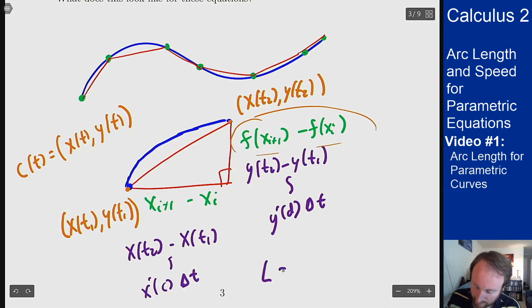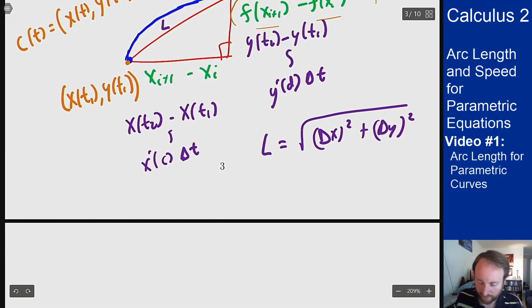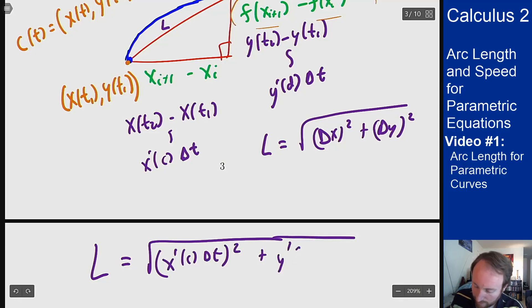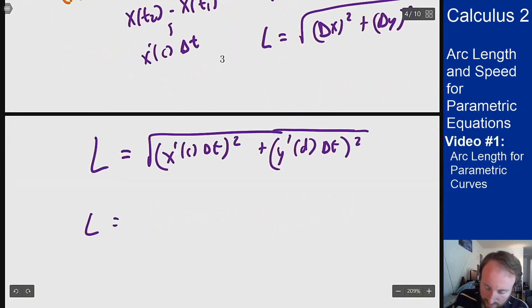And so the length here is going to be delta x squared plus delta y squared originally. Now that I'm applying the mean value theorem I can write this length now as the square root x prime at c times delta t squared because that replaces delta x plus a y prime at d times delta t squared. And now I can factor out delta t. So my L is going to be delta t square root x prime at c squared plus y prime at d squared.